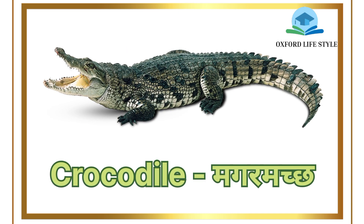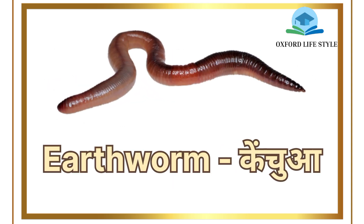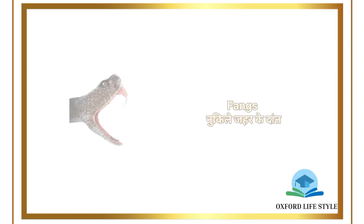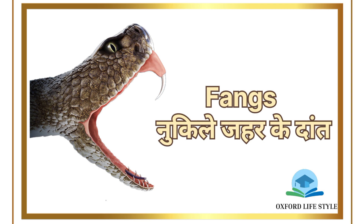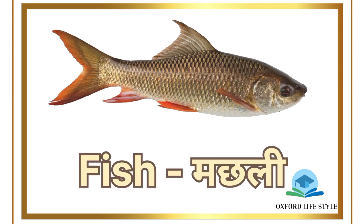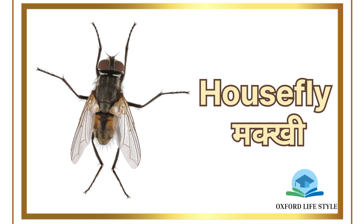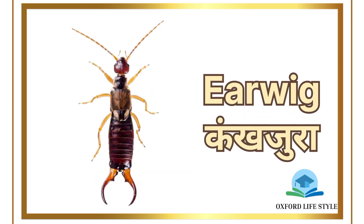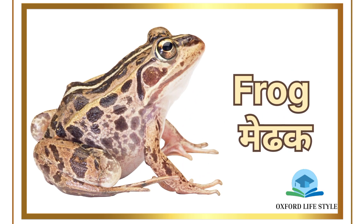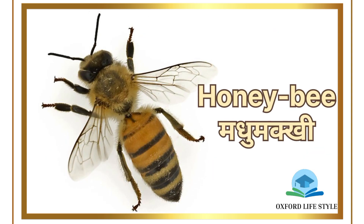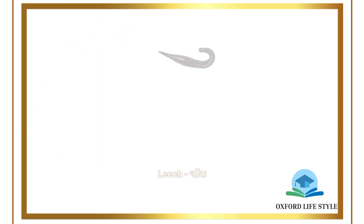Cricket: Jhingul, Crocodile: Magarmach, Earthworm: Kenchua, Eel: Baam Machli ya Sarp Meen, Fangs: Nukilay Jehre ke Dant, Fish: Machli, Housefly: Makhi, Earwig: Kamkhajura, Frog: Medhak.